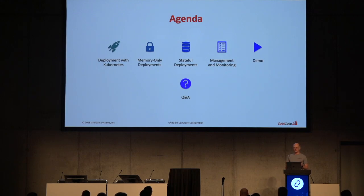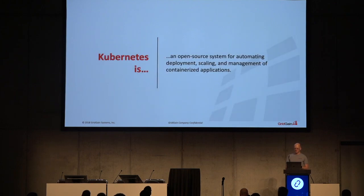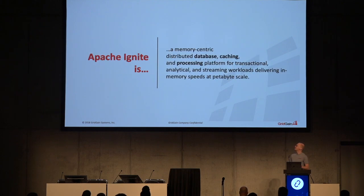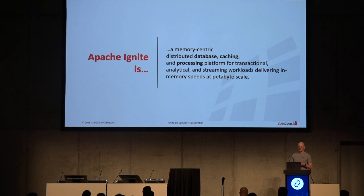So we're at an infrastructure conference, so I assume you know what Kubernetes is — very simply, an open-source system for automating deployment, scaling, and management of containerized applications. What you might not know quite so well is what an in-memory distributed database is. While there are a number of different products available, the one I'm going to talk about here is Apache Ignite.